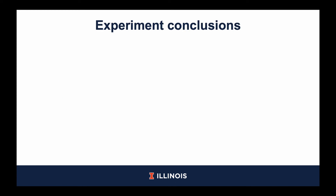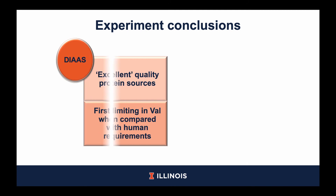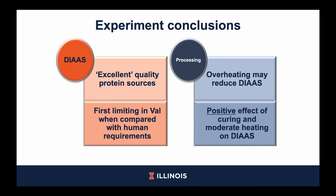For the first experiment with the pork products, we are able to conclude that based on DIAAS, all of these products can be considered excellent quality protein sources for the specific age group. In addition, the amino acid in least concentration when compared with human amino acid requirements was valine for all pork products. For processing, we can conclude that overheating may reduce DIAAS as observed in the pork loins, and there may be a positive effect of curing and moderate heating on DIAAS as observed with the pork hams and loins respectively.